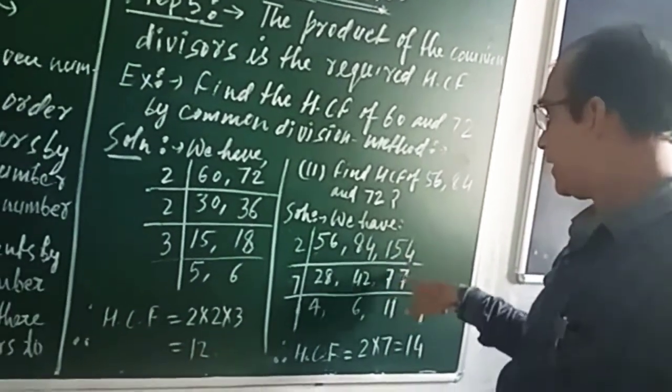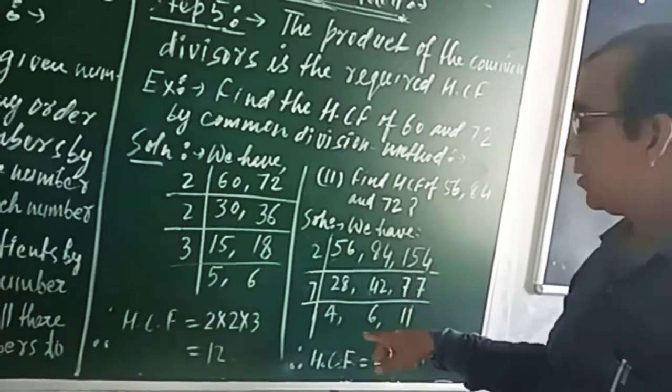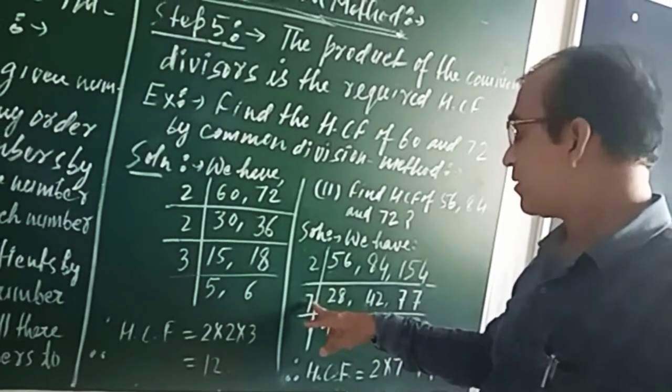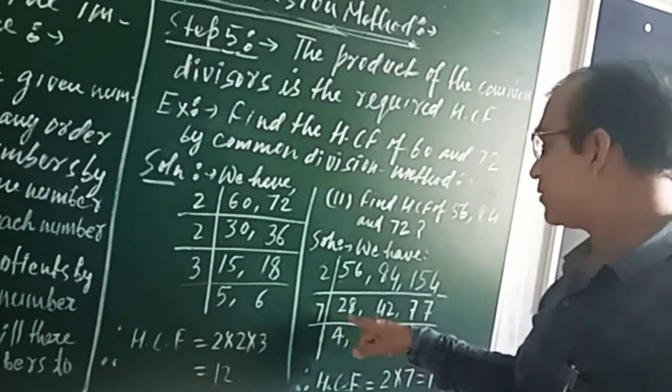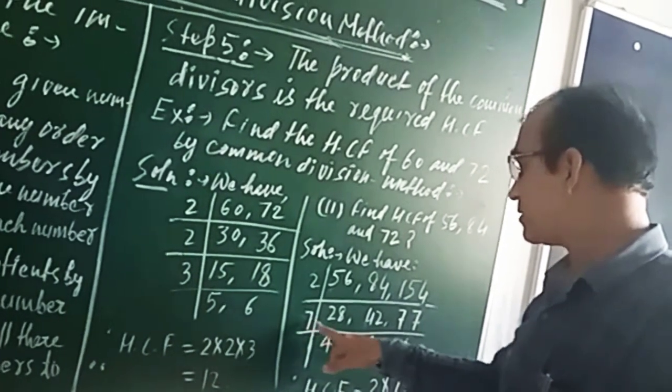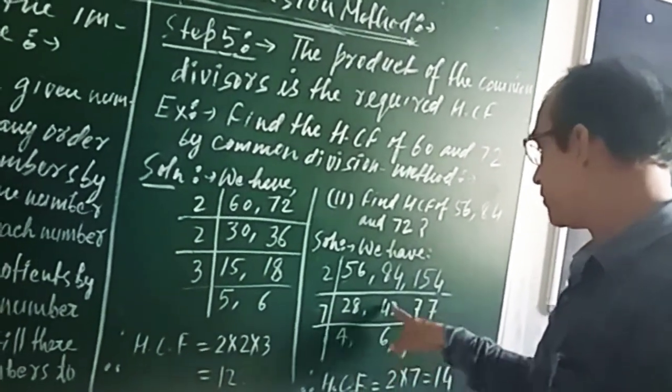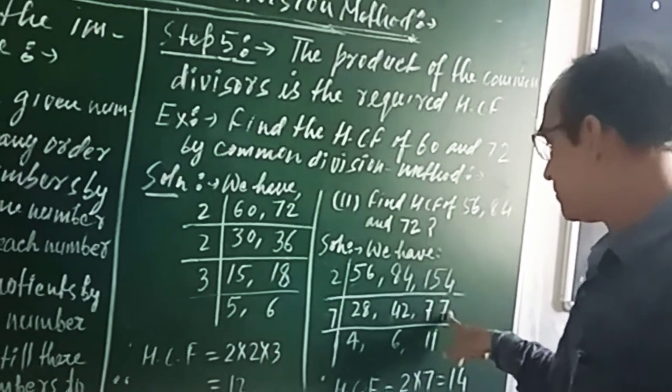Now the smallest common divisor is 7. So divide 28, 42 and 77 by 7, we will get: 7 fours are 28, 7 sixes are 42, and 7 elevens are 77.